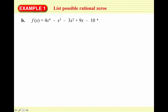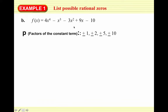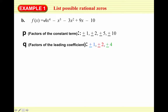Here we have a more interesting case because our constant term is negative 10 and our leading coefficient is 4. So our p values — factors of negative 10 — are plus or minus 1 (paired with plus or minus 10) and plus or minus 2 (paired with plus or minus 5). For q, factors of 4 are plus or minus 1, plus or minus 2, and plus or minus 4.